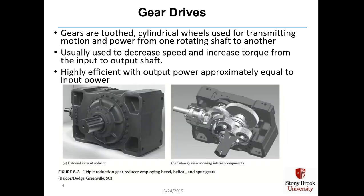Gears are toothed cylindrical wheels used for transmitting motion and power from one rotating shaft to another. When you use gear drives in mechanical design, normally you decrease speed and increase torque from the input to the output shaft. It's a very efficient way of transmitting power. For spur gears, you often get efficiencies over 99% for how much energy is transmitted.